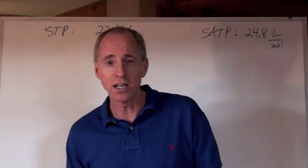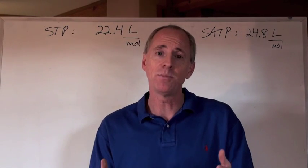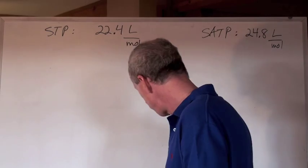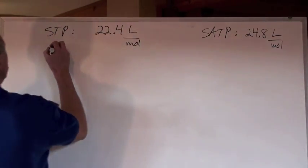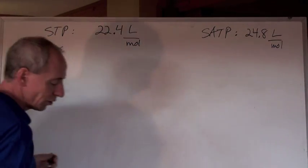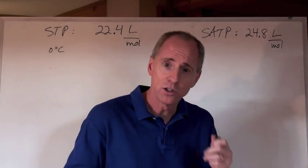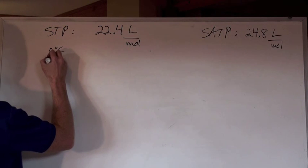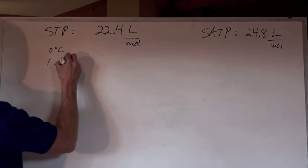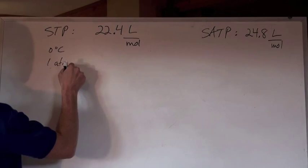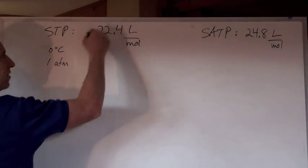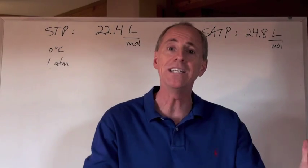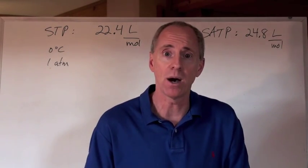STP — that's a nice abbreviation you've heard before. STP: Standard Temperature and Pressure. The standard temperature is zero degrees Celsius, which is 273 K, and the standard pressure is one atmosphere. So at zero degrees Celsius and one atmosphere, the molar volume of a gas is 22.4 liters — that's what one mole of gas will occupy.